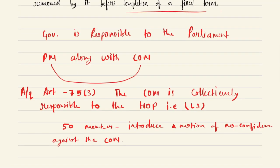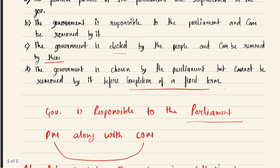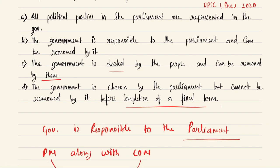So, from this discussion, the government is responsible to parliament — the PM along with the Council of Ministers is collectively responsible to Lok Sabha, the members of the Council of Ministers are elected members of parliament, and the rules of Lok Sabha provide the mechanism. Therefore, option B is the right answer: the government is responsible to the parliament and can be removed by it. In such a system, the role of the president or monarch is primarily ceremonial, and the prime minister along with the Council of Ministers wields the effective power.